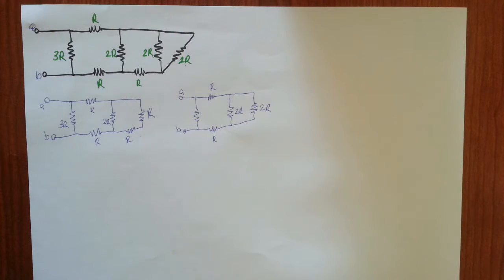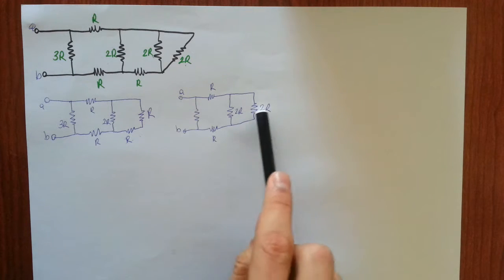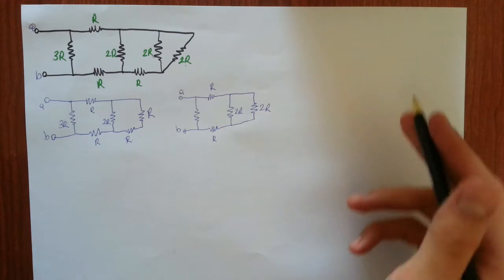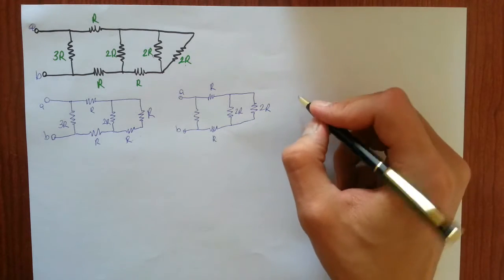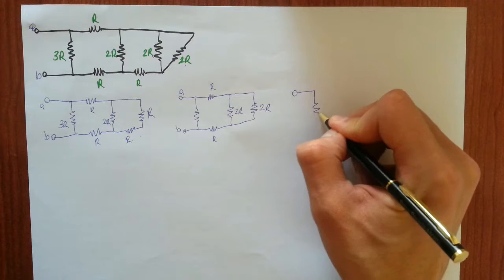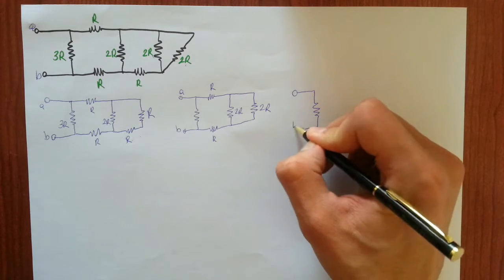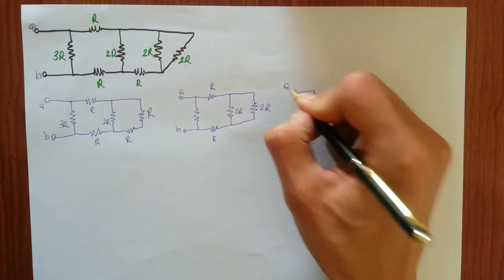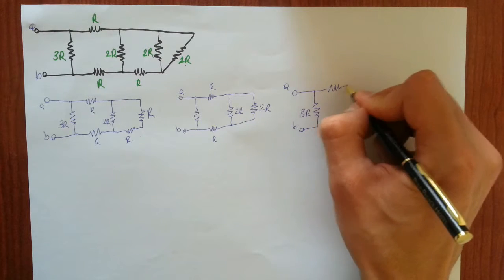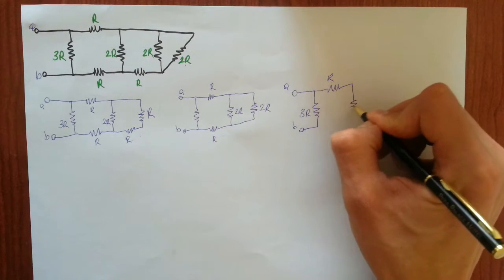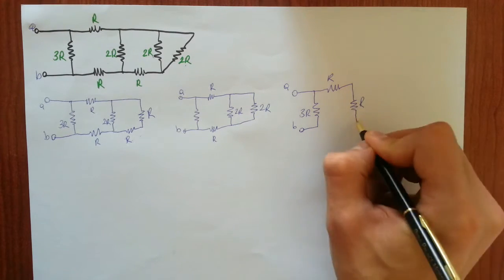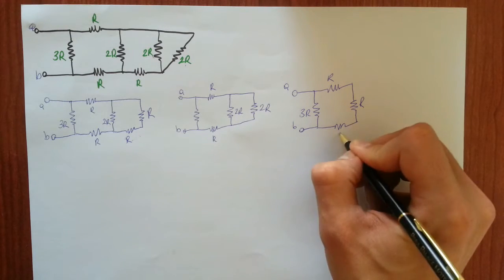So 2R and 2R are in parallel with each other — they make one single R resistor. Terminal A, 3R, terminal B, R, equivalent R, and R.